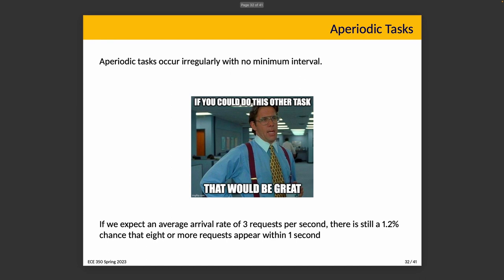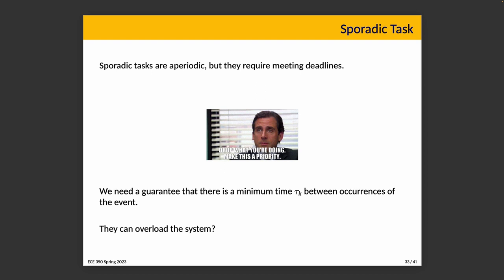Aperiodic tasks occur irregularly with no minimum interval between occurrences, making it very difficult to guarantee completion before any next occurrence. Such tasks are rarely hard real-time; we schedule them on a best-effort basis without letting them prevent a hard-deadline task from completing. If we expect three requests per second, there is at least a 1.2% chance that eight or more requests occur within the same second — unlikely but possible.